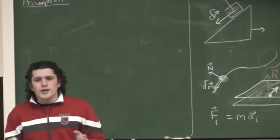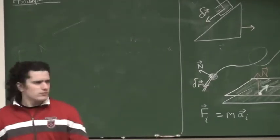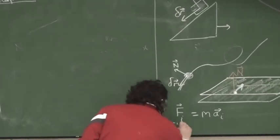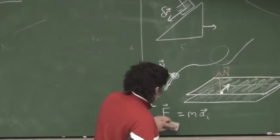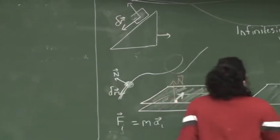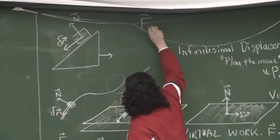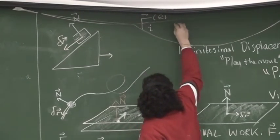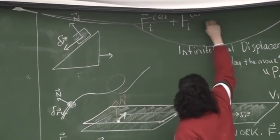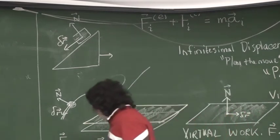So, the first thing we're going to do is we're going to split this force up. We'll think of it as made up of two separate forces. Those forces that come with constraints and those forces that don't. So, let's write this out. I can write the force on the i-th particle as those from some external sources plus those due to constraints. And I can let this be the mass times the acceleration of the i-th particle.